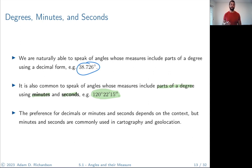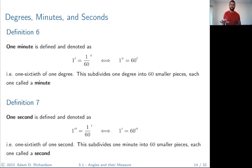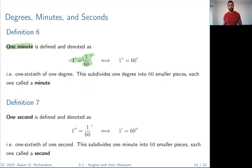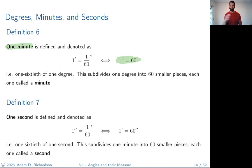Minutes and seconds are commonly used in cartography and geolocation — GPS coordinates are often given in degrees, minutes, and seconds. One minute is defined as 1/60th of a degree, so one degree equals 60 minutes. Then one second is defined as 1/60th of a minute, so one minute equals 60 seconds. You'll use these relationships to convert between decimal degrees and degrees-minutes-seconds.